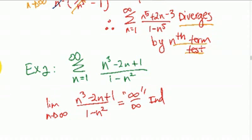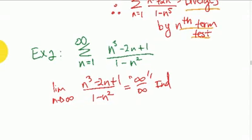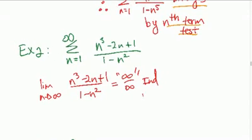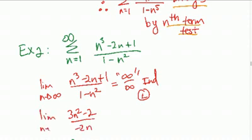Indeterminate. And I'm going to do L'Hopital's rule this time. So we derive the top and the bottom, so I'd get 3n squared minus 2 over negative 2n. And when I plug in infinity again, I still get infinity over infinity.